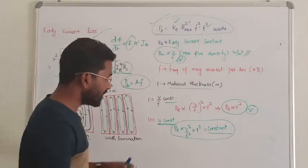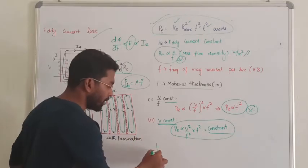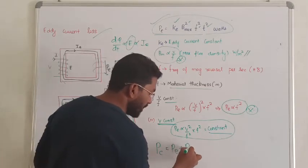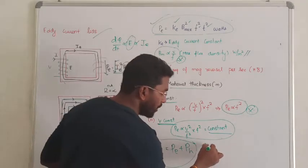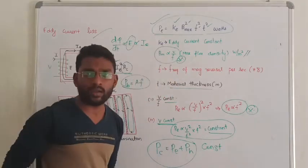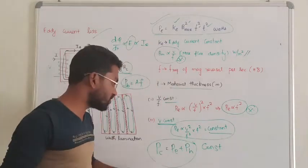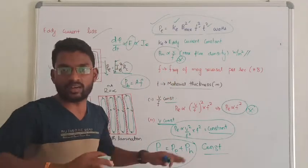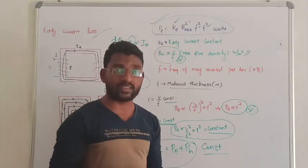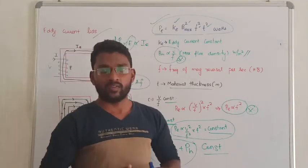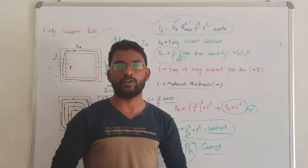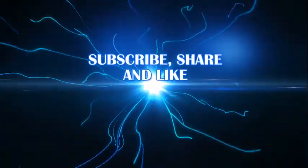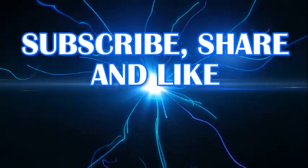So this is all about eddy current loss. Clear? In the next lecture we will see total core loss. Actually core has two losses, one is called eddy current loss, another one is called hysteresis loss. These two losses are called constant losses. So this is all about eddy current loss and hysteresis loss. I hope you all understand. If you have any doubt, you can ask in the comment section. Thanks for watching our videos. See you all.